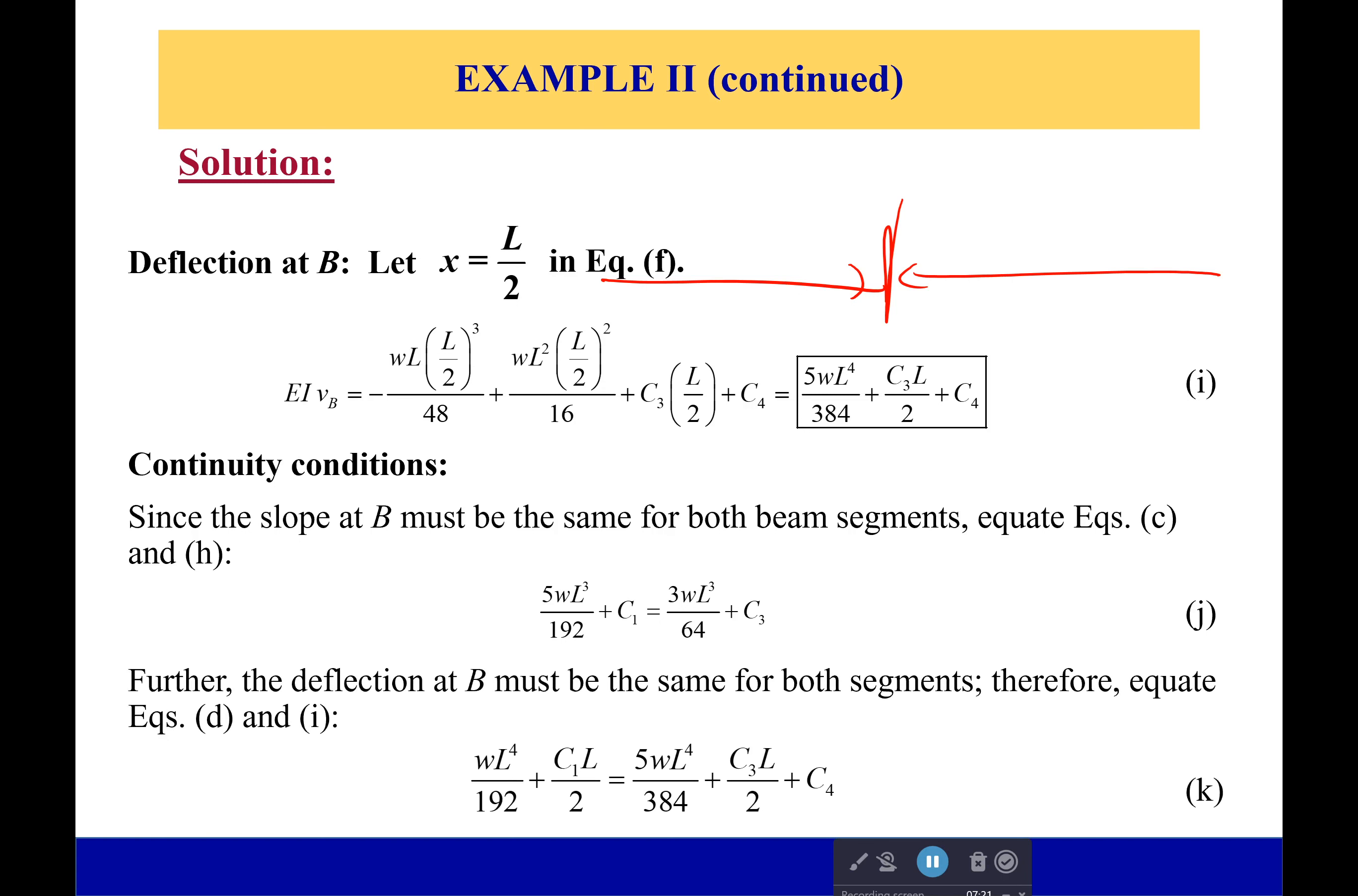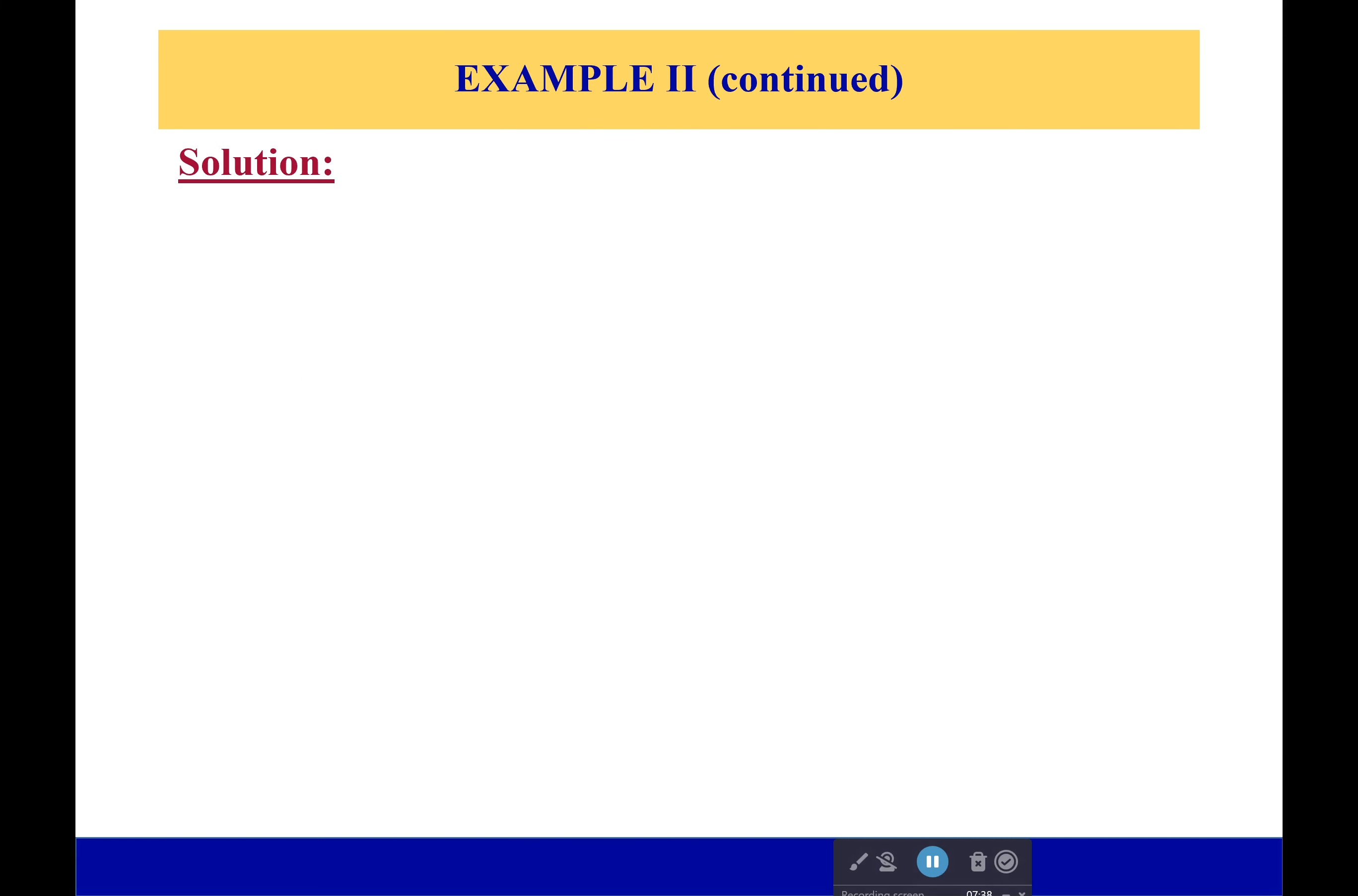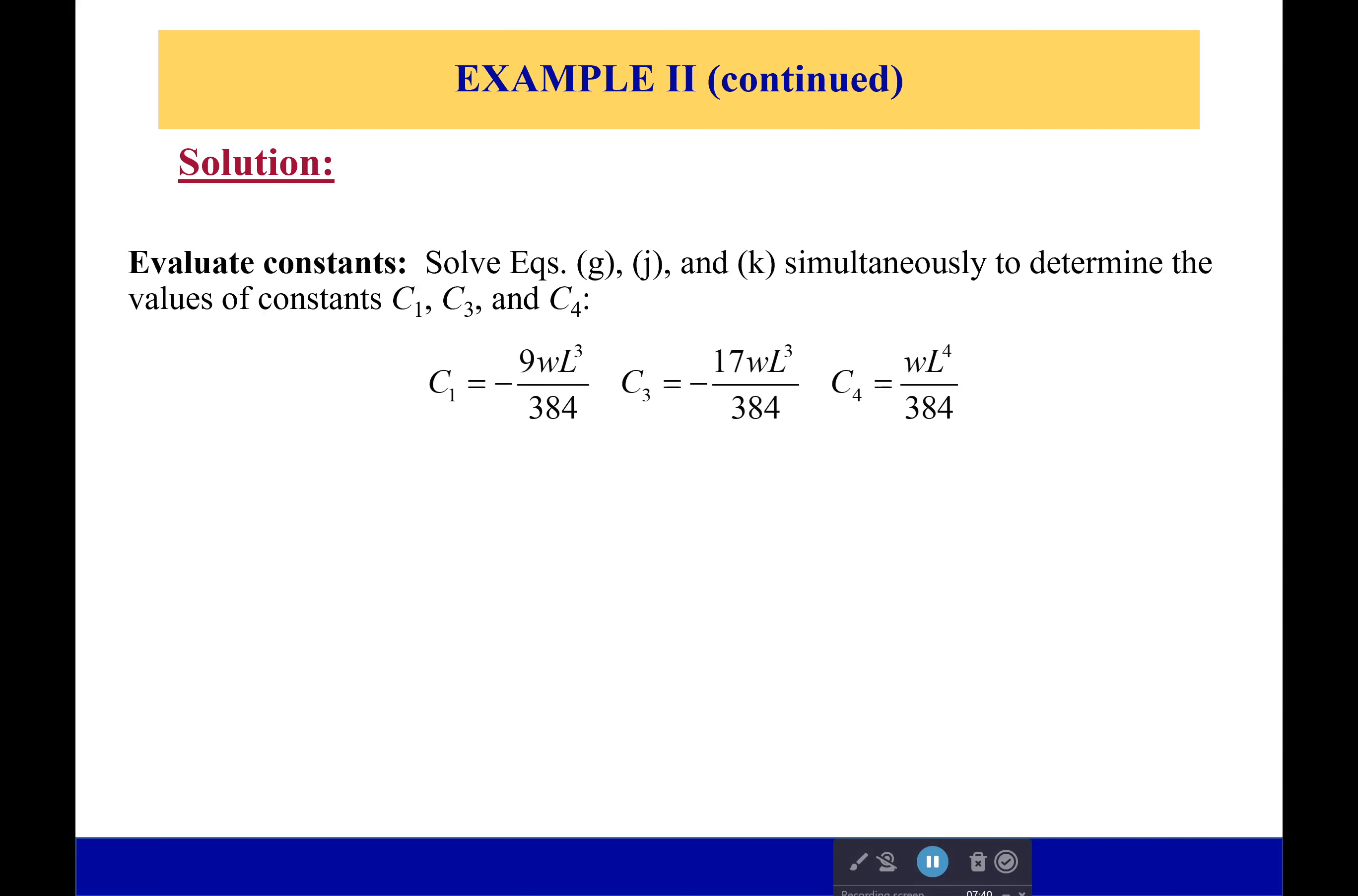So with this, I have one, two, three unknowns, two equations, and we also have that equation earlier for the deflection at point C, which gives us three equations and three unknowns. It's not fun at all, but if you do some algebra—I'm not going to do it right here—you can do the algebra. It's not always fun. You can solve to get what C1, C3, and C4 are.